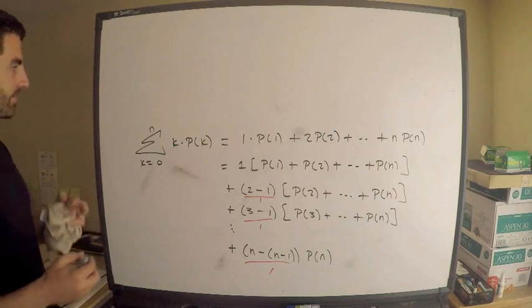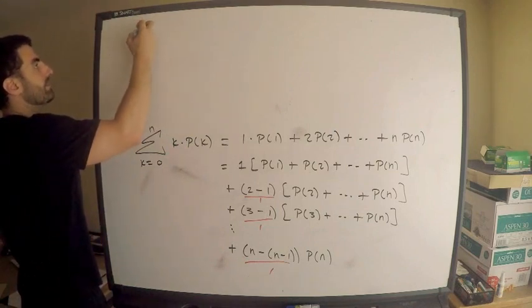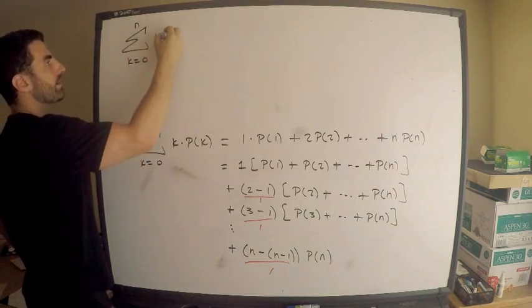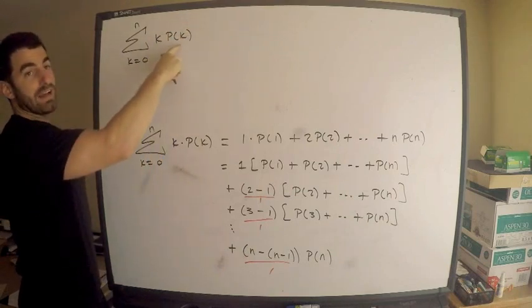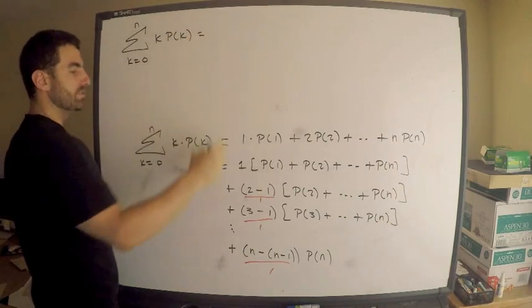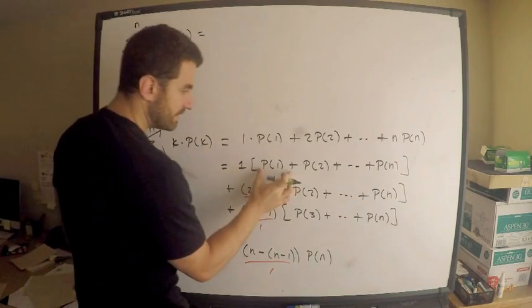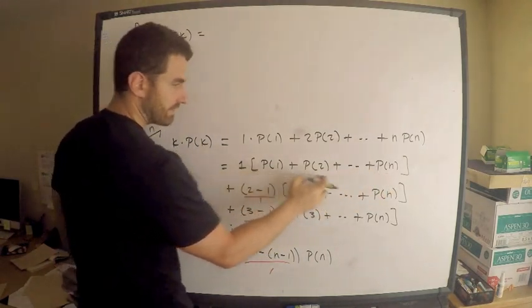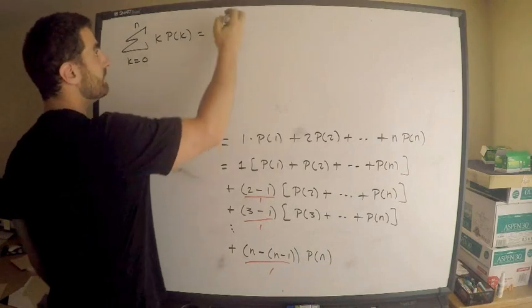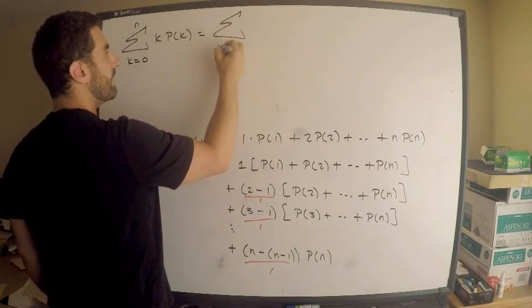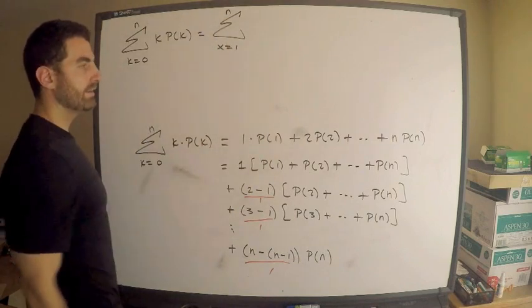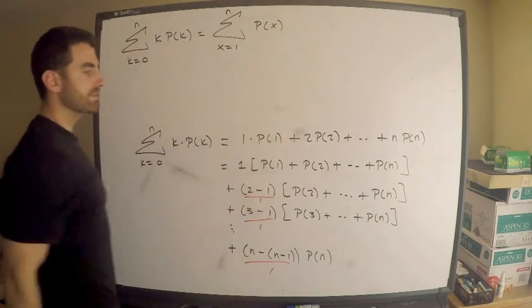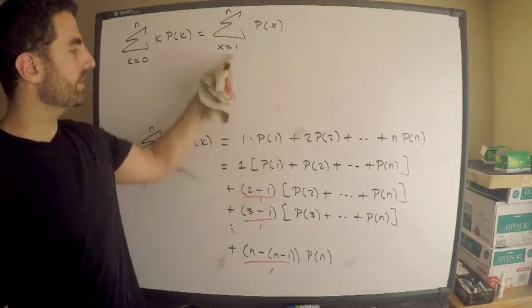So what we have is the following. We have that the sum from k equals 0 to n of k times the probability that basically x equals k. That's how you can read that, right? Is equal to this stuff. What is this stuff? Every coefficient in front is 1. What is this? This is the sum from, say, x equals 1 to n. So this is the sum from x equals 1 to n of, yeah, probability x. That's what this is. I mean, plug in 1, I get probability 1, plug in 2, etc., right?